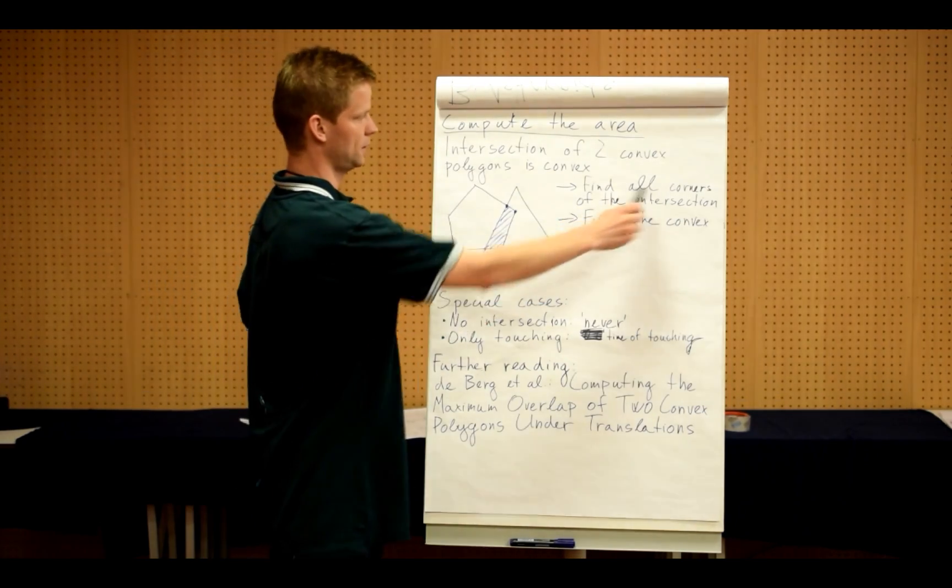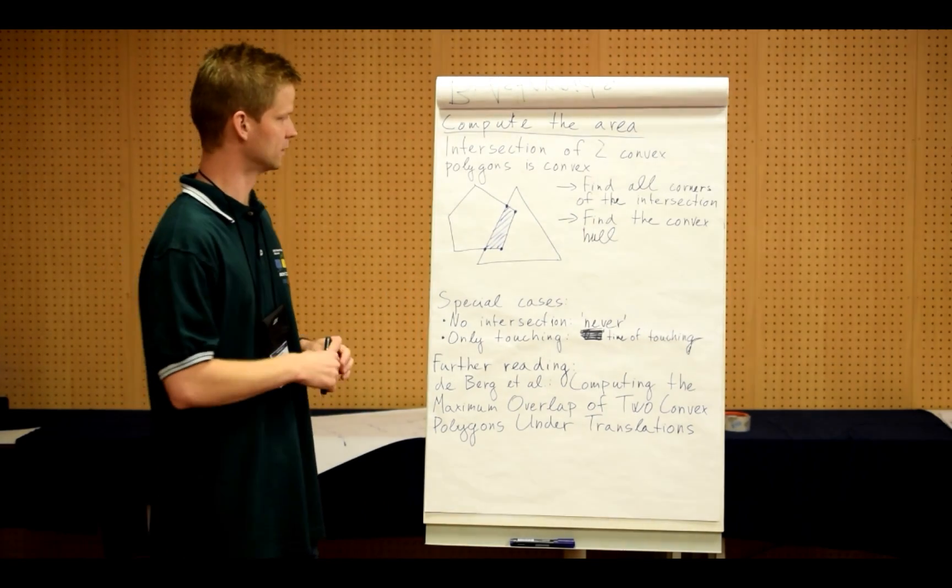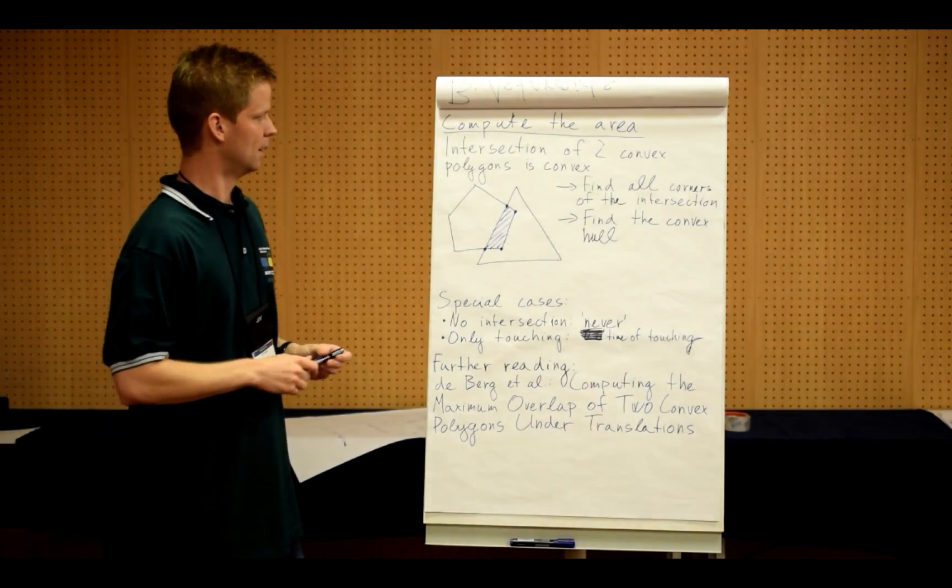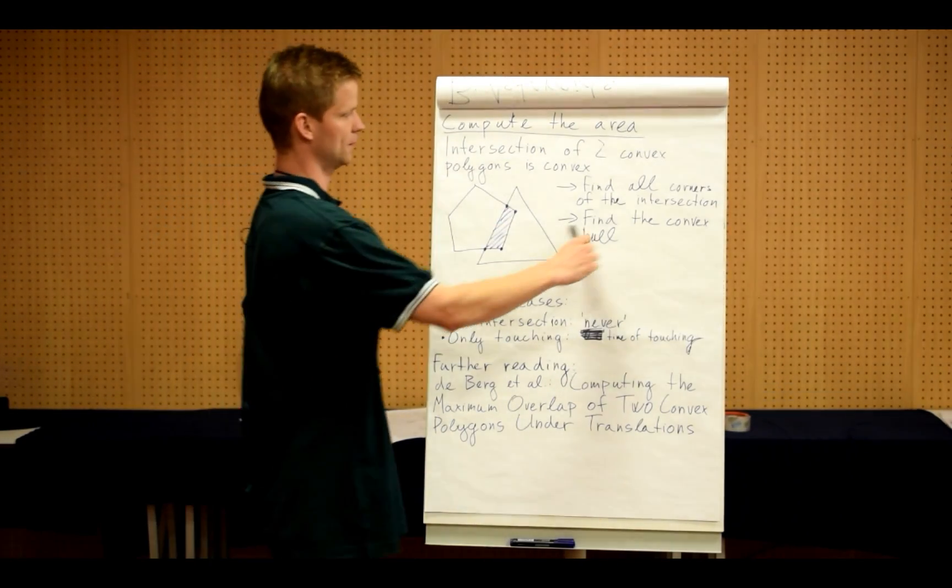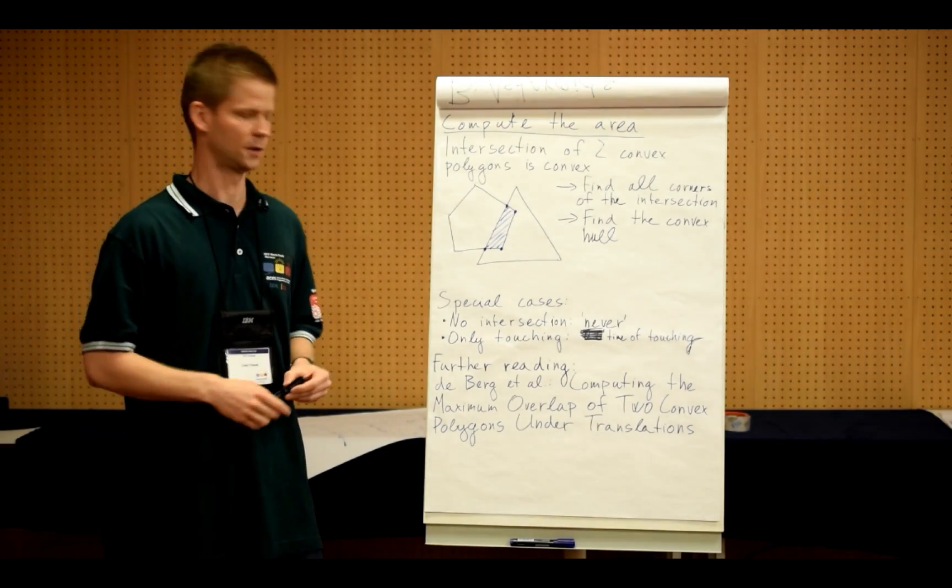One way to find this polygon is to find all the corners of the intersection first. All the corners are either vertices of the original polygons or intersections of two line segments. So we can find all the interesting points and then find the convex hull of this set, and we've constructed our intersection.